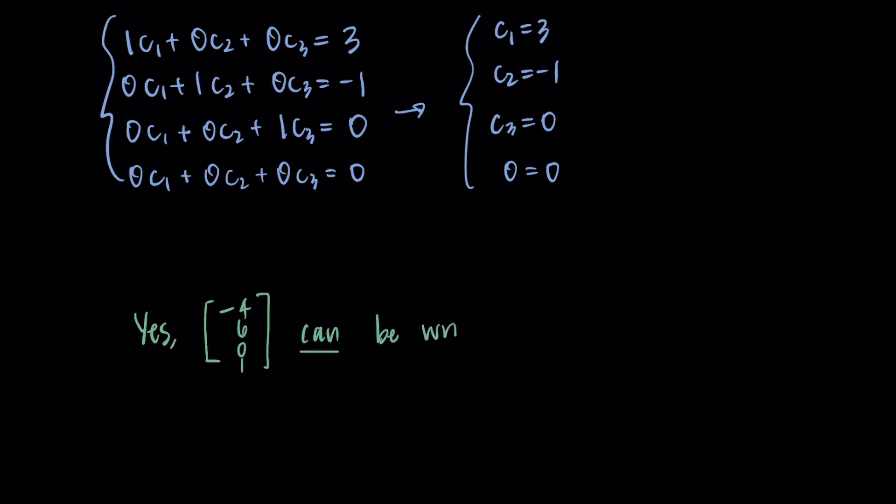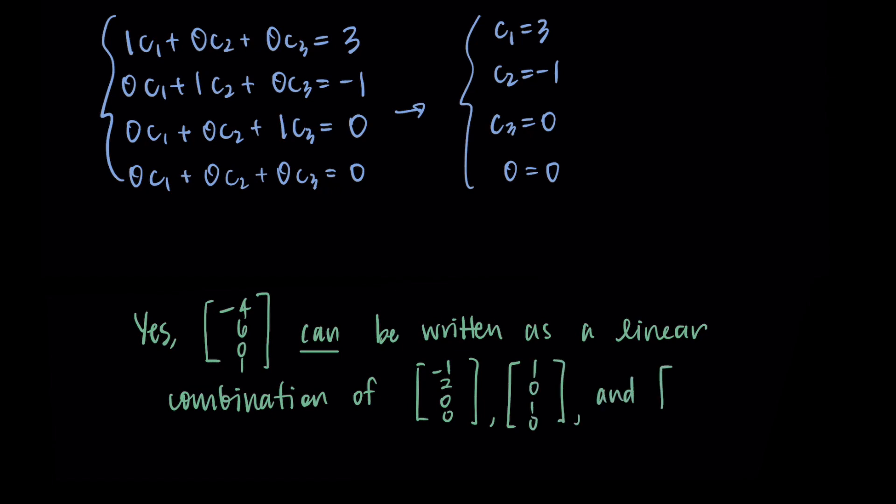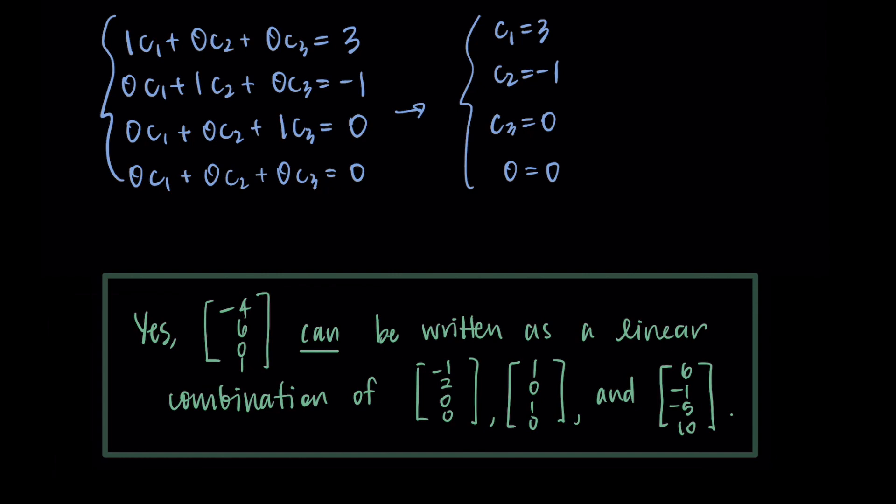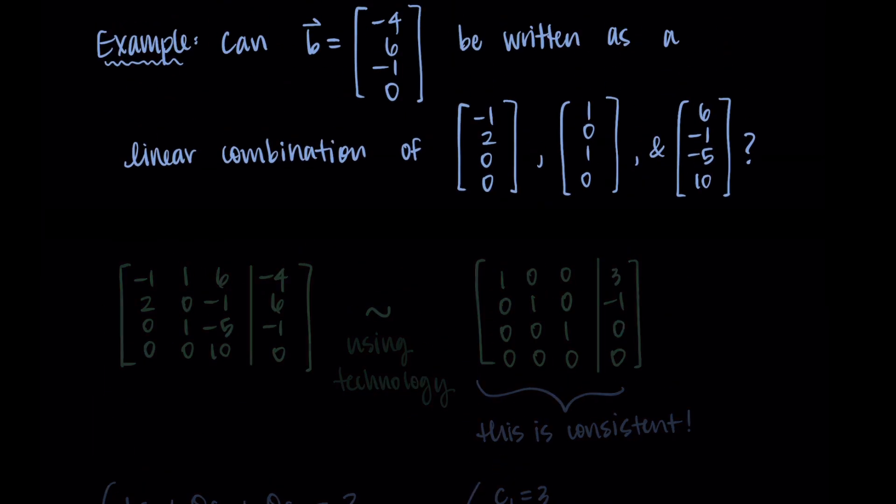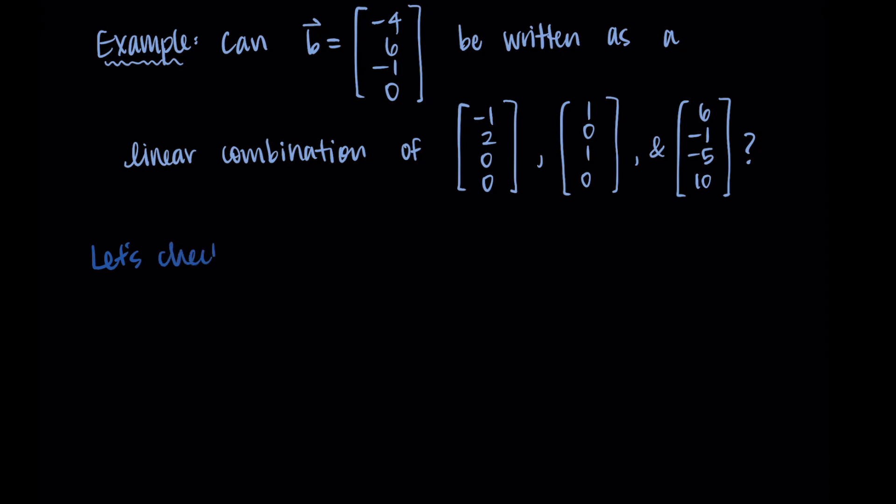So these are the weights we would use to create the linear combination. And we can confirm that yes, the vector can be written as a linear combination of those three vectors we started with. We can even confirm our answer. So I like to do this sometimes when I'm working through these examples. I want to be really sure that I found the right answer by finding the right weights. So the question is, is there a c1, a c2, and a c3 that make this linear combination work?